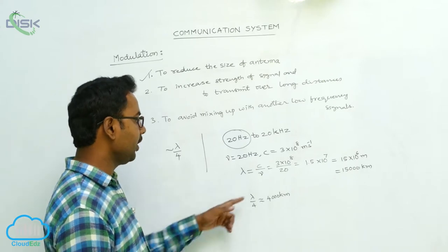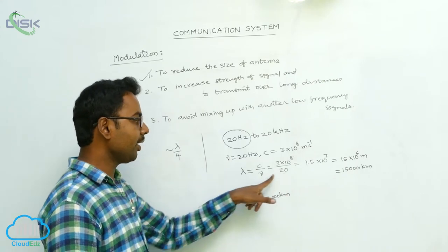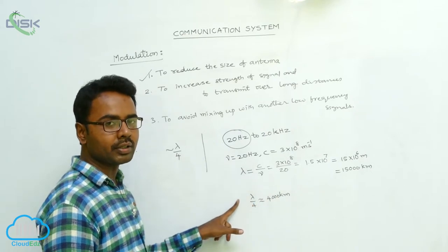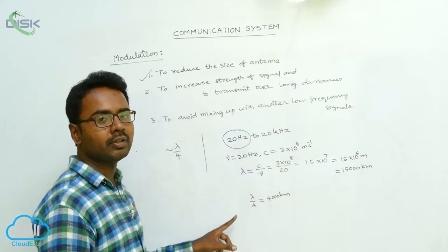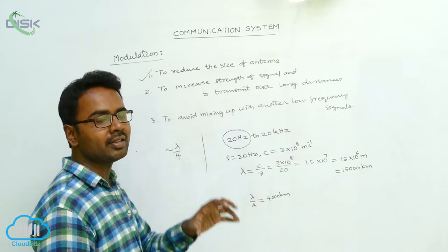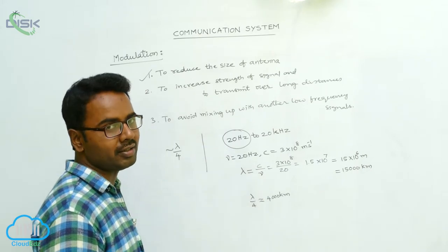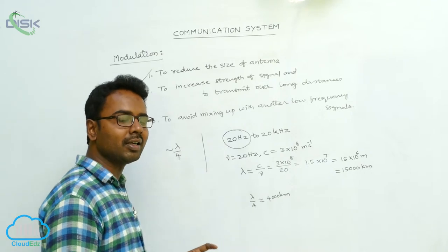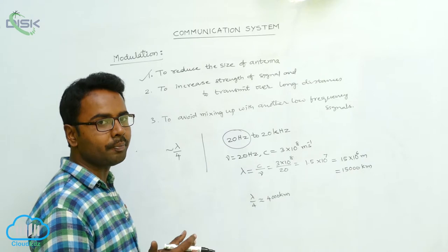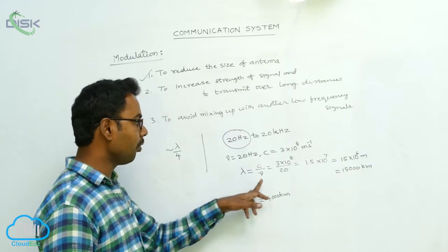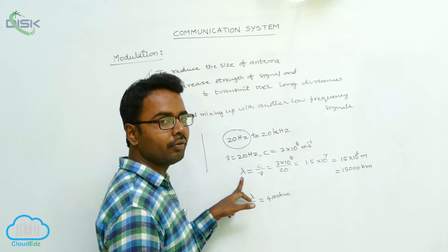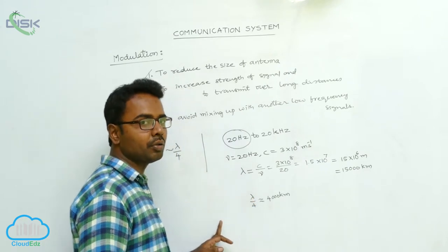So if we increase the frequency, the wavelength will be reduced. If wavelength is reduced, then the size of the antenna will be reduced. We are not increasing the frequency of the original message signals; instead, the original message signals are mixed with high frequency signals. When they are mixed, the resultant frequency will be more. When frequency increases, automatically wavelength decreases, and the size of the antenna also decreases.